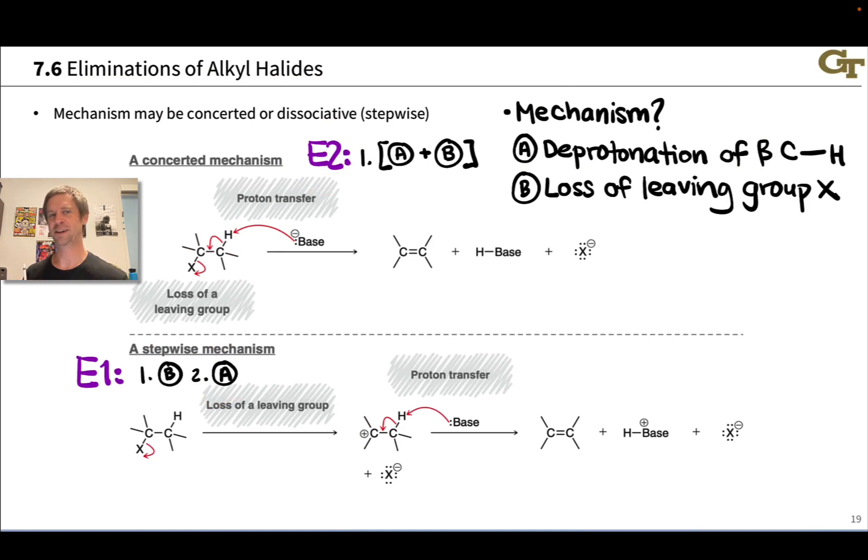There's a third possibility here for the mechanism of elimination. It involves a stepwise pathway in which deprotonation, A, occurs before loss of the leaving group, B. This is observed in some contexts, and it's known as E1CB. However, alkyl halides do not engage in E1CB eliminations. So we're not going to touch on them here. You will touch on them in organic chemistry, too, in a very specific context where E1CB is the norm. For now, we're going to focus on the E2 and E1 mechanisms, which are typical of alkyl halides.